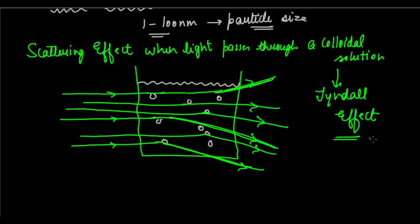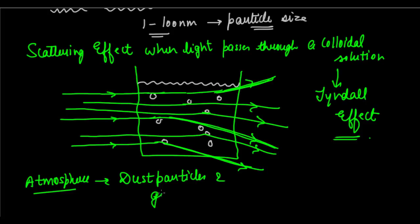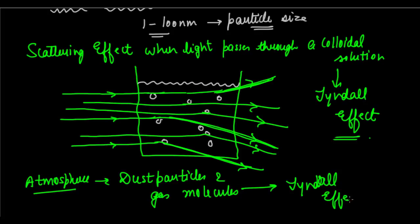The Tyndall effect is when dust particles or colloidal particles scatter light. This can also be seen in the atmosphere, where dust particles and gas molecules scatter light and produce the Tyndall effect. In our chapter specifically, we will discuss the Tyndall effect in the atmosphere caused by dust particles and gas molecules — they absorb the light and then scatter it in different directions.